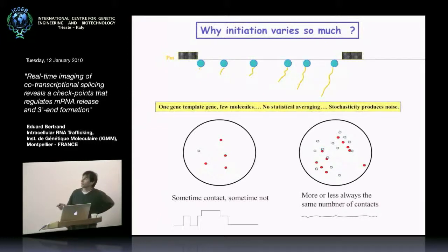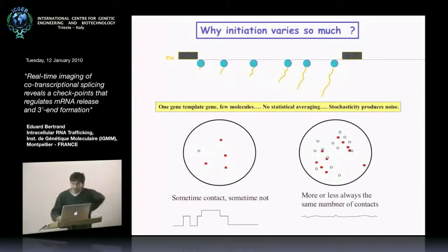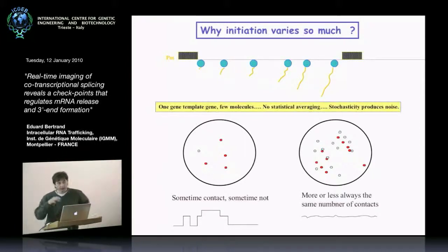In contrast, if you have many molecules, some protein will dissociate or bind, and on average you will have more or less the same number of binding events. This is one of the reasons why you have this variation in initiation.